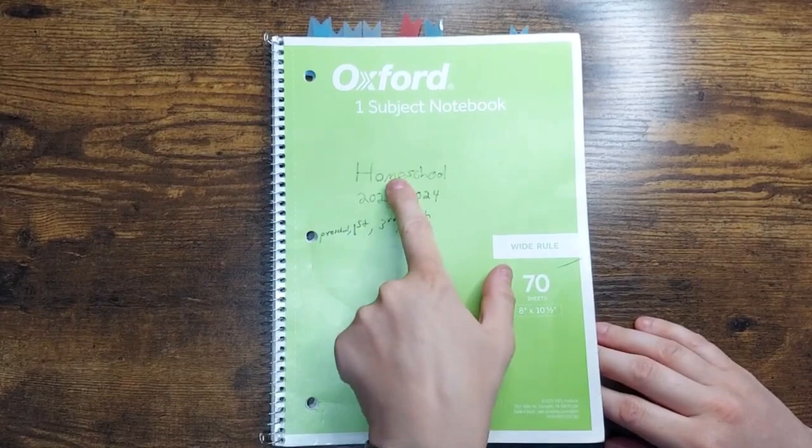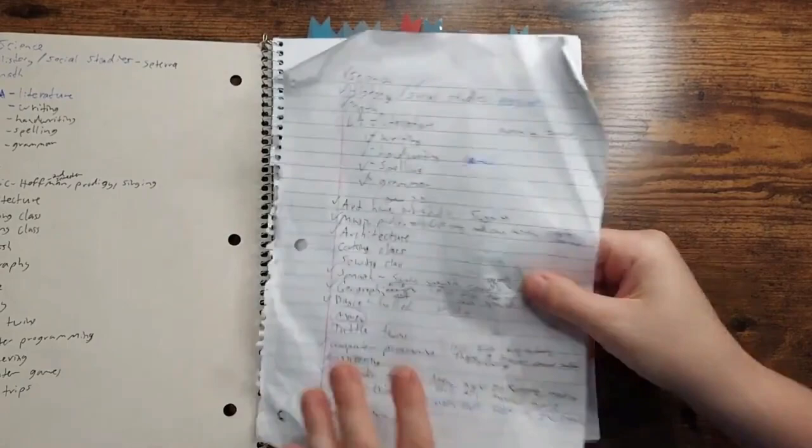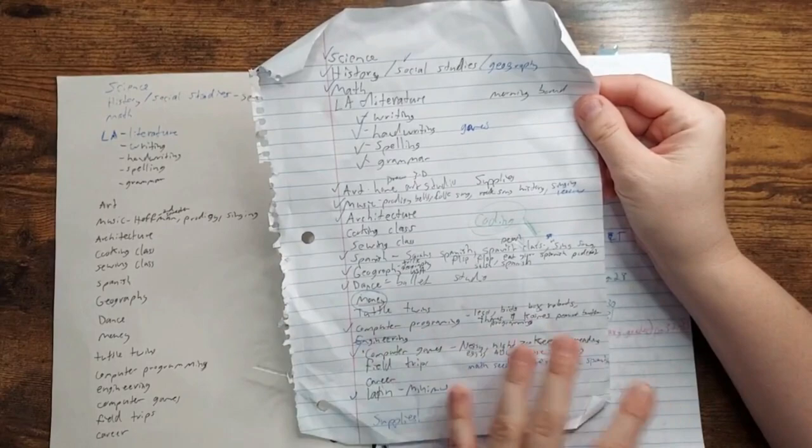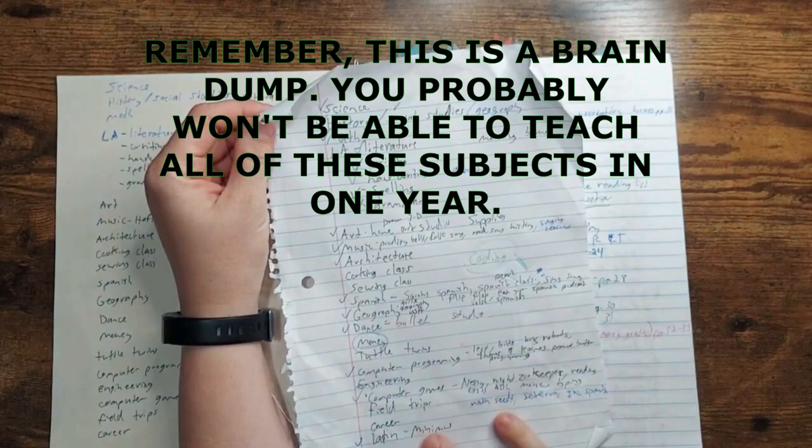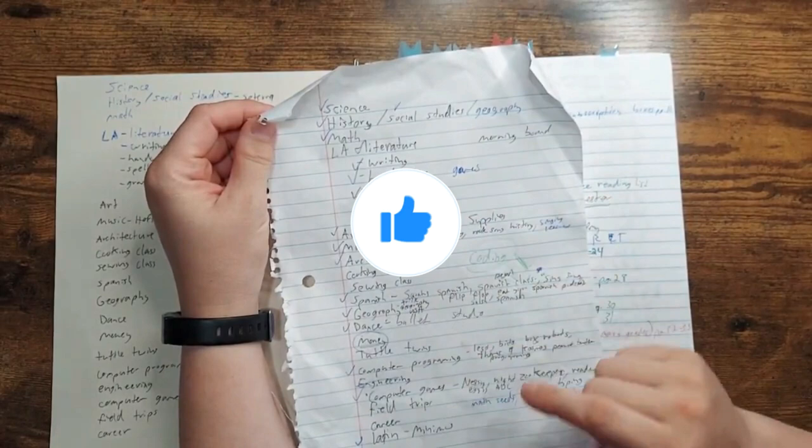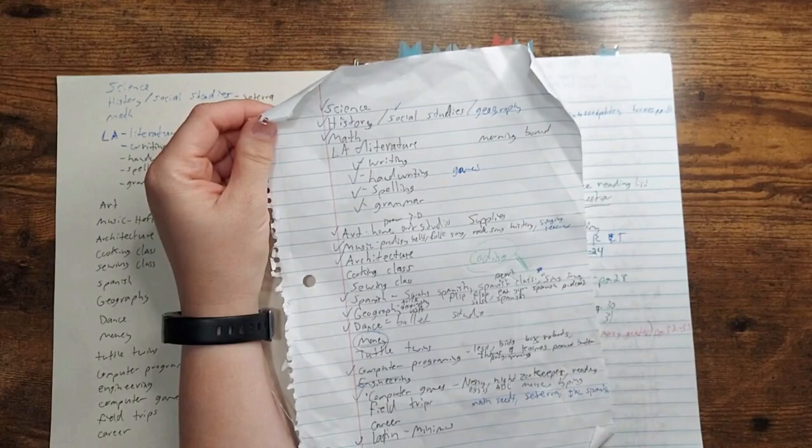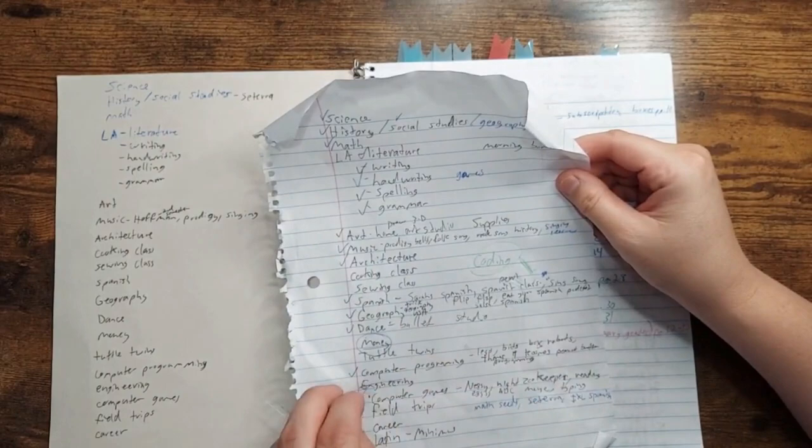Now the first page you're going to do is a brain dump. I tore this out just to make it easier for flipping back and forth. So you're just going to start with the subjects that you know you have to teach and then anything else you want to teach. Additional things I have are architecture, cooking class, sewing class, Spanish, dance, Tuttle Twins, computer programming, Latin, singing lessons, things like that. So those are not specifically required by my state, of course, but they're things I want to include in our curriculum.